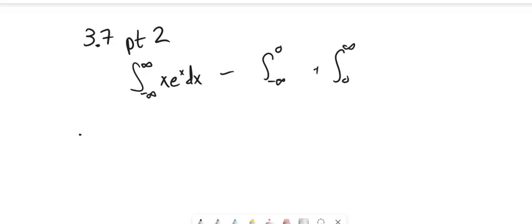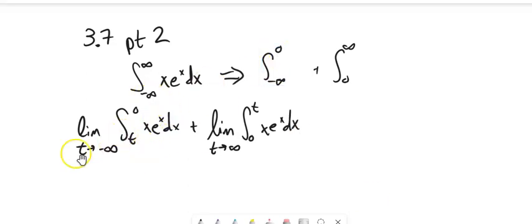And we do that with limits. Notice I broke it up into two pieces. Limit as t approaches negative infinity, so from t to zero. And then limit as t approaches infinity from zero to t.